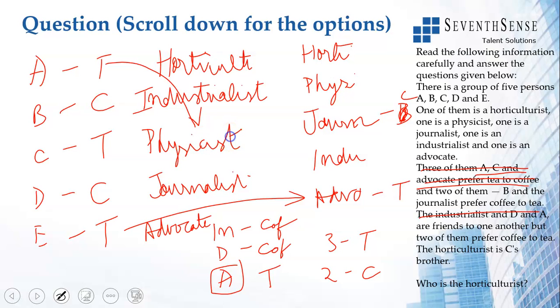So you have the preferences of all the people and the occupations. So whatever question is asked, you can answer. Who is the Horticulturist here? We know it is A. Who prefers, Journalist prefers which drink? Coffee. All of those you can answer. If they say, Advocate and Industrialist prefer the same drink, true or false, it is false. They prefer different drinks. You can answer anything once you make this arrangement.